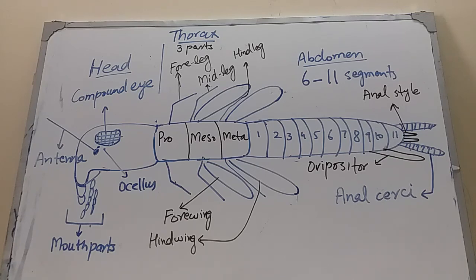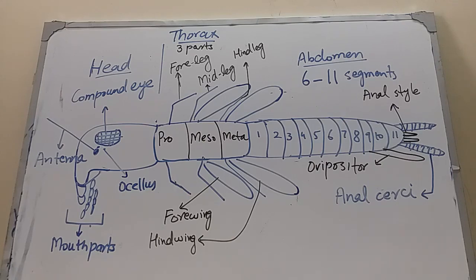In summary, the external morphology of an insect consists of: head, containing sensory organs — compound eyes, ocelli, antennae, and mouthparts; thorax (the middle part), having prothorax, mesothorax, and metathorax with three pairs of legs and one or two pairs of wings; and abdomen, consisting of 6 to 11 abdominal segments, one pair of anal cerci, one pair of anal stile, and ovipositor. Thanks for watching and don't forget to subscribe.